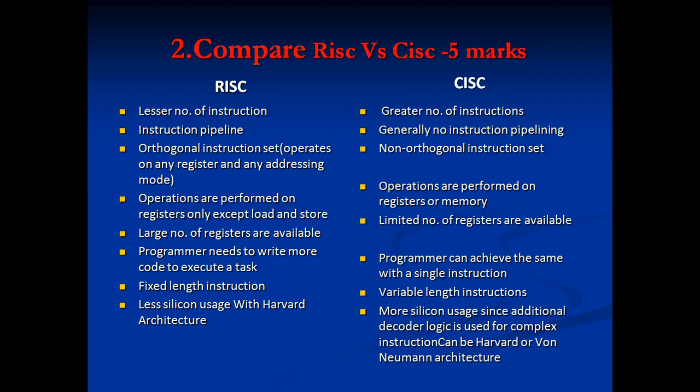Next question: compare RISC versus CISC, asked for 5 marks. RISC means Reduced Instruction Set Computer; CISC means Complex Instruction Set Computer. In RISC, there are a lesser number of instructions; in CISC, there are a greater number of instructions. RISC uses an instruction pipeline, but CISC does not use an instruction pipeline.